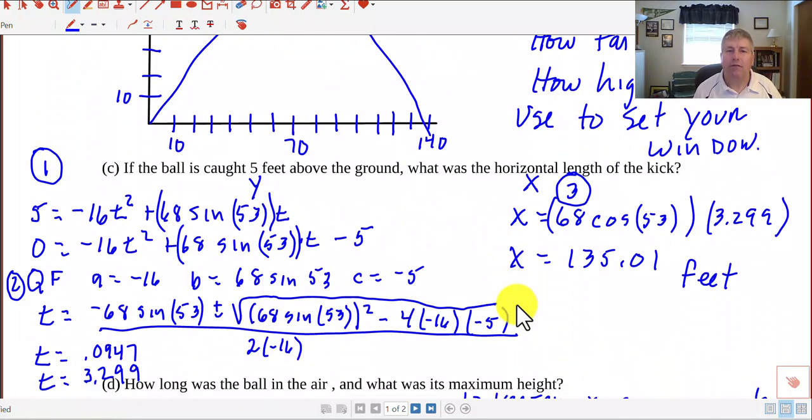Now if the ball is caught five feet above the ground, what is the horizontal length of the kick? Well, five feet above the ground - that five feet is a y, and the horizontal length is an x. So what we need to do here is find out at what times the ball is five feet above the ground. Because we can see it's going to be five feet above the ground twice - on the way up and then back on the way down. Because five feet above the ground is a y, we'll use our y equation, set it equal to five, and solve for t.